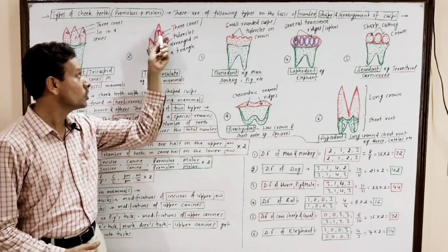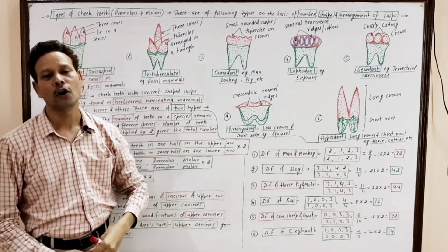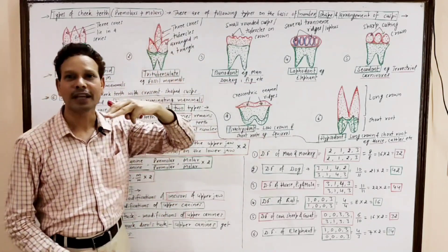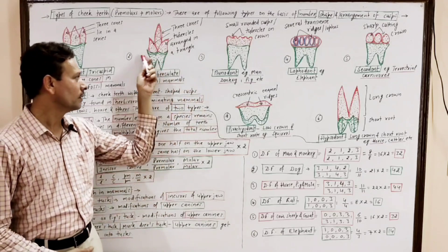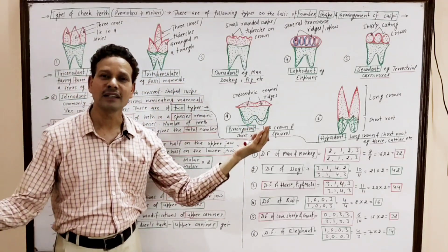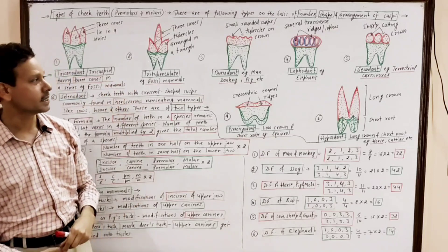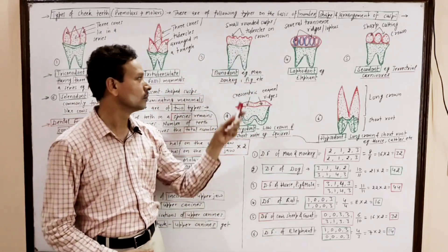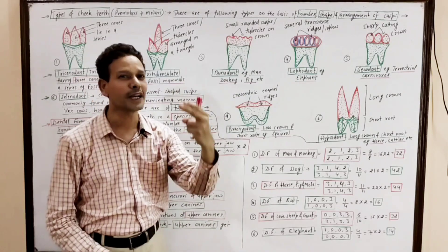Type number two is trituberculate. Note down: trituberculate means three cusps, and these three cusps or ridges or tubercles are arranged in a triangle. This type of cheek teeth is again found in fossil mammals.